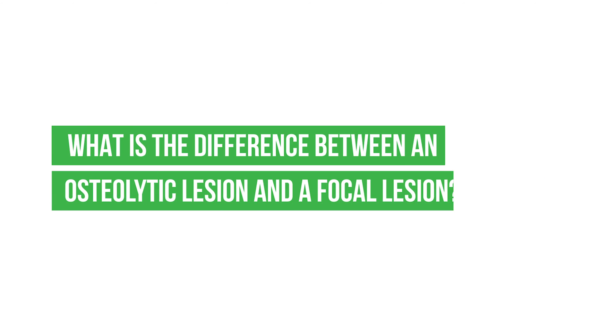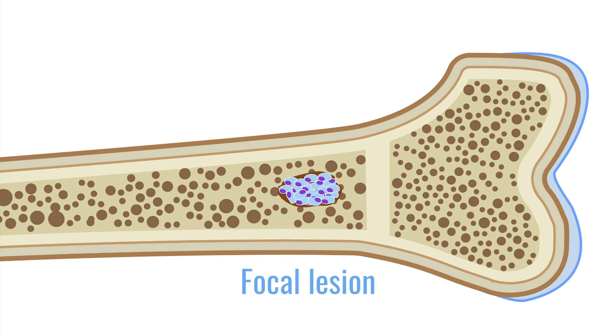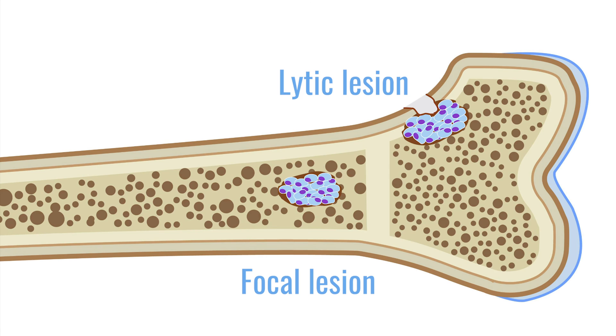What is the difference between an osteolytic lesion and a focal lesion? A lot of doctors mix that up. A focal lesion, as we call it in the literature and in research, is an accumulation of plasma cells — of myeloma cells. It's a small myeloma tumor in the bone marrow that has not destroyed the surrounding bone yet. An osteolytic lesion is when this tumor causes a hole in the bone. So: focal lesion — no hole in the bone; osteolytic lesion — hole in the bone.